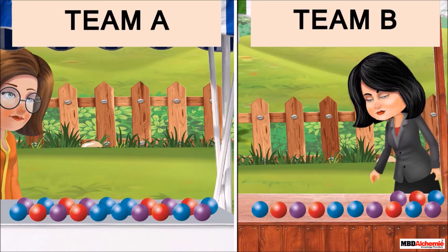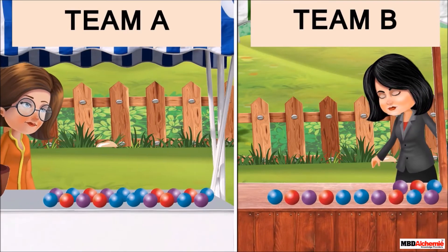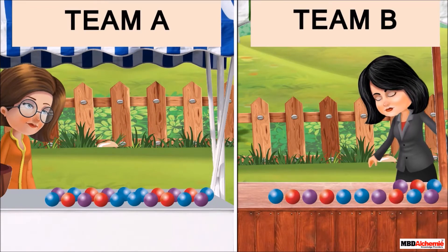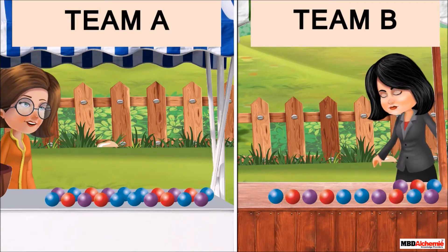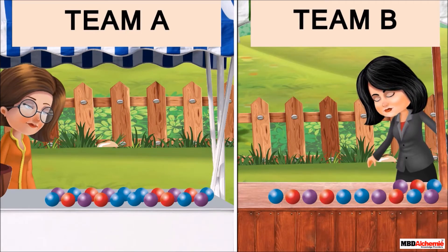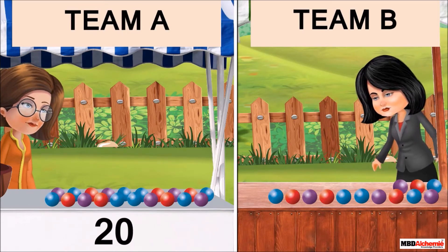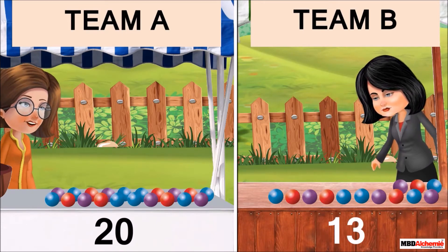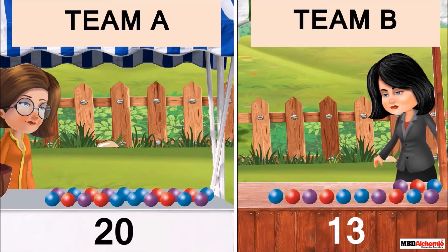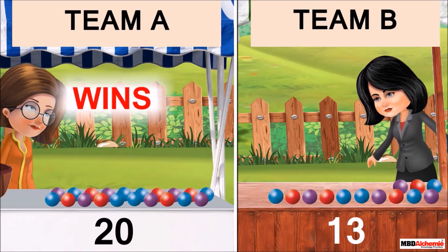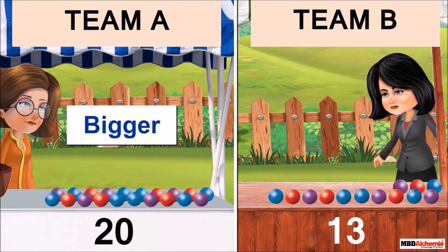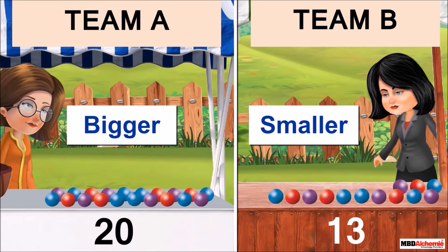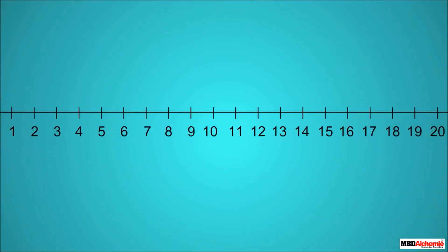The teacher then counts the total number of balls that both teams have collected in their buckets. Team A has collected 20 balls and team B has collected 13 balls. Thus team A wins. This means 20 is a bigger number and 13 is a smaller number.